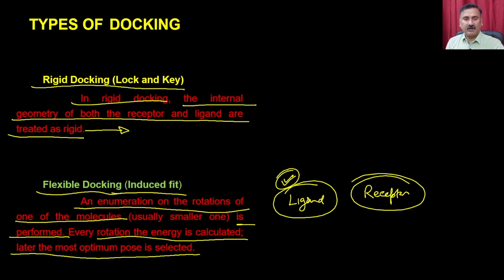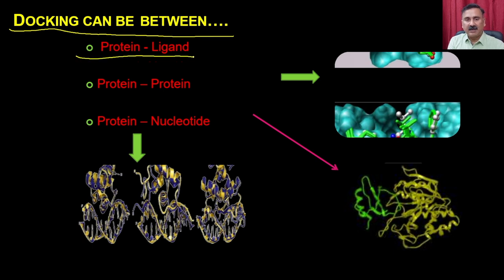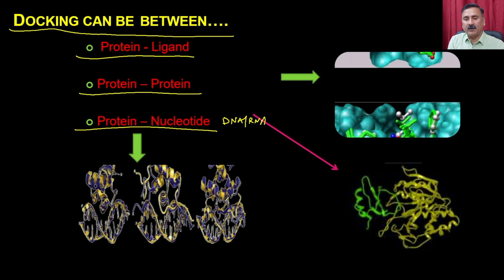As far as docking is concerned, you can do docking between different pairs: protein-ligand docking, protein-protein docking, and protein-nucleotide — that is, DNA or RNA docking. Either of these pairs can be studied in docking experiments.